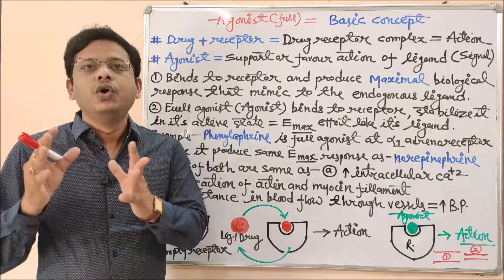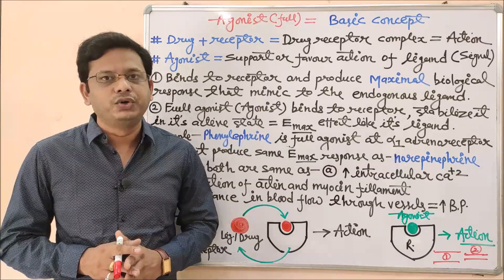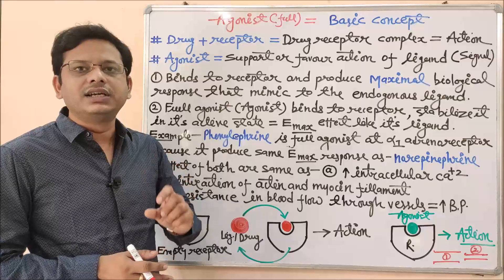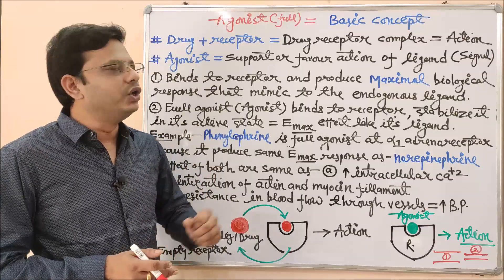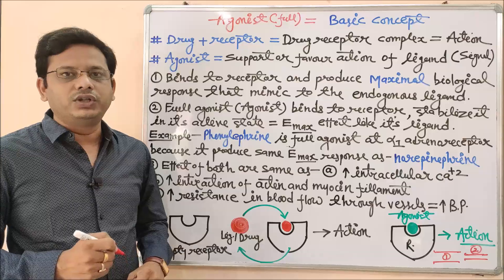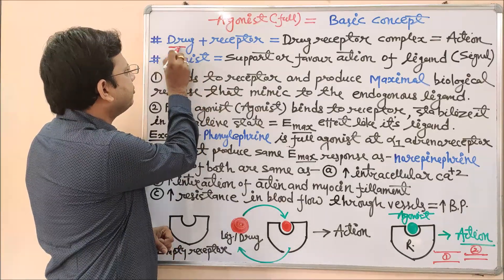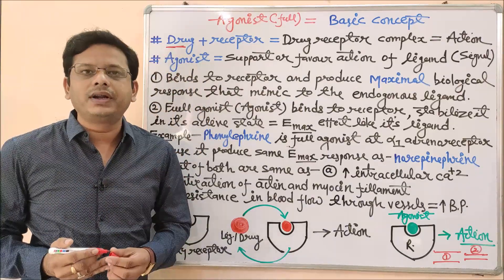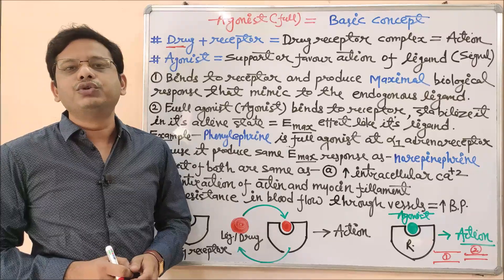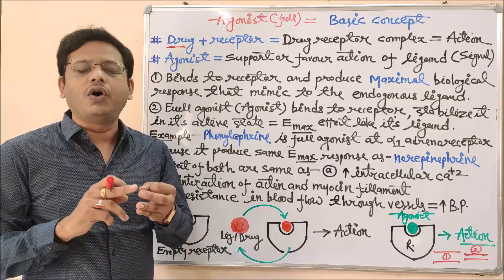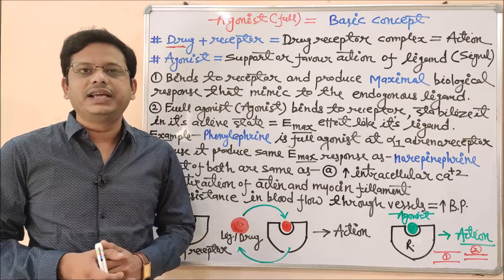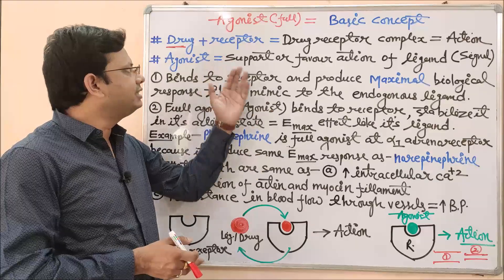So agonists are those agents which produce the same biological response as the main signal molecule or main ligand molecule would have produced. Now let me explain a few basic concepts before going further. The first one is 'drug' — any chemical agent which is used for the diagnosis, prevention, or treatment of any disease or disorder is considered a drug.